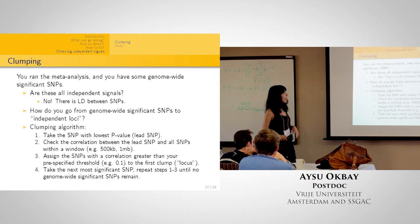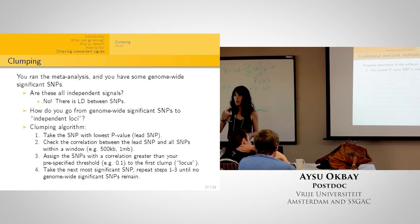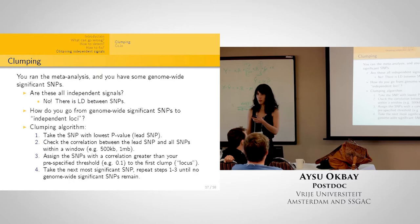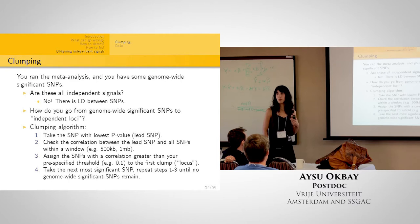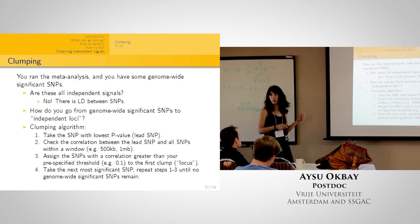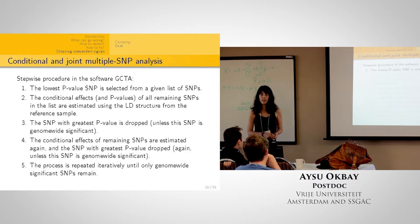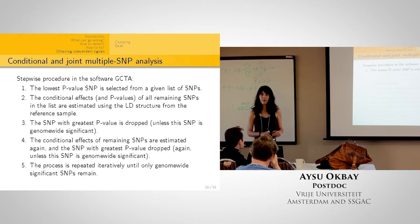Another method is Conditional and Joint multiple-SNP analysis (COJO), implemented in GCTA, which also requires a reference sample representative of your discovery sample's LD structure — for example, the 1000 Genomes European sample. You take the lowest p-value SNP, estimate conditional effects and p-values of all remaining SNPs using the LD structure from the reference sample, then drop the SNP with the greatest p-value, repeating until no genome-wide significant SNPs remain. This allows estimating conditional effect sizes, but is very sensitive to differences between the LD reference sample and the discovery sample.